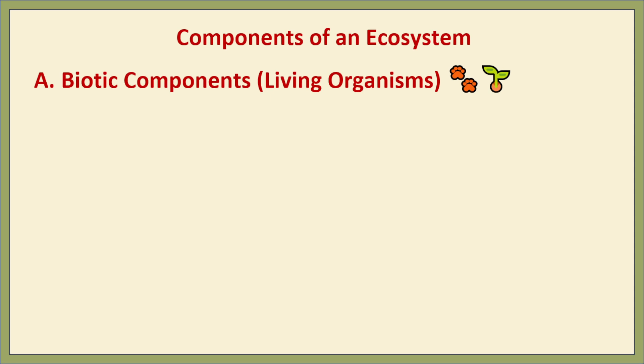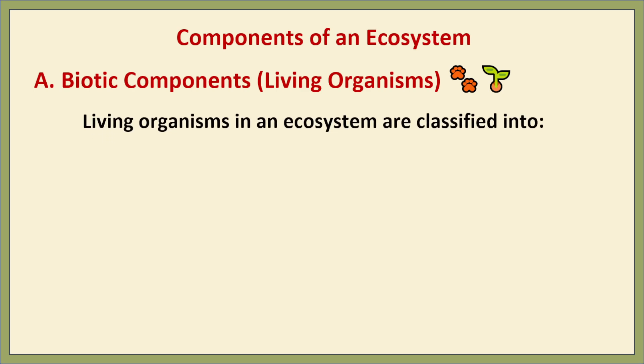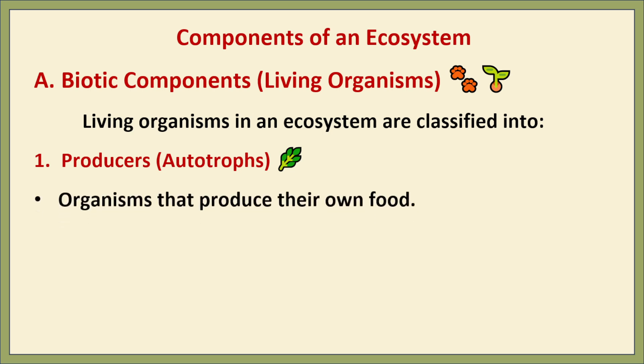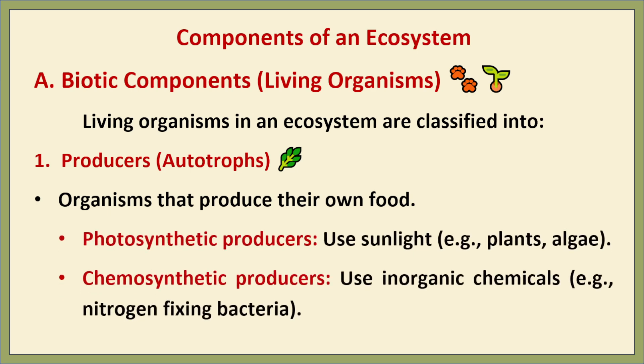Let us first discuss the biotic components. A biotic component includes all living organisms that play a specific role within an ecosystem. They are classified into three main categories. The first one is producers. Producers are organisms that can synthesize their own food using energy from sunlight, a process known as photosynthesis, or using inorganic chemicals, a process called chemosynthesis. They form the base of the food chain and provide energy for all other organisms in the ecosystem. Examples include trees, plants, grasses, and nitrogen-fixing bacteria.